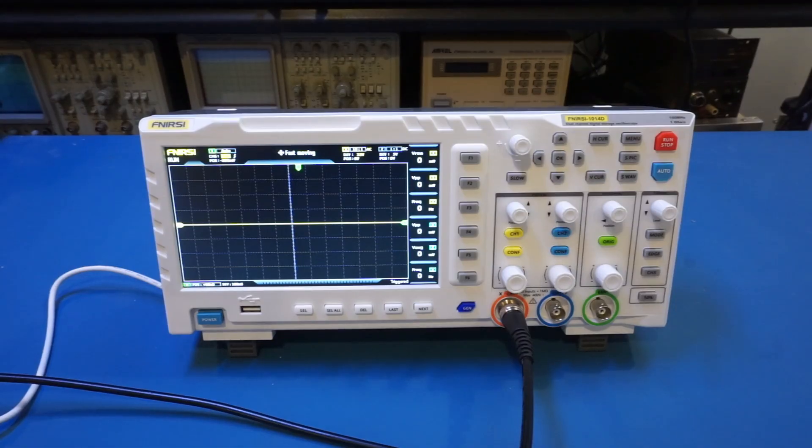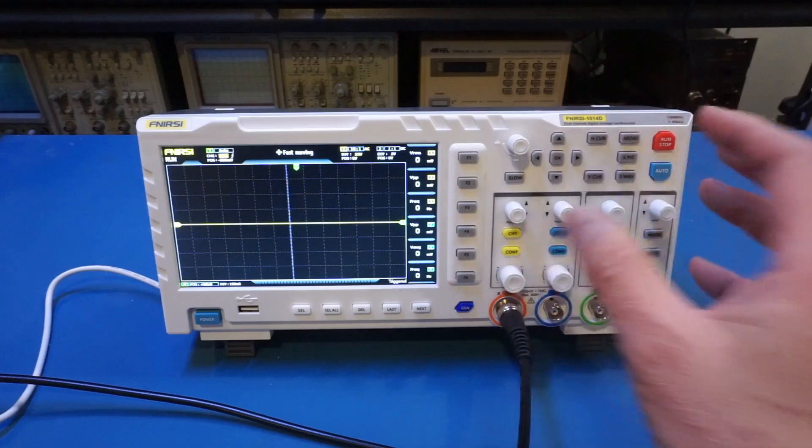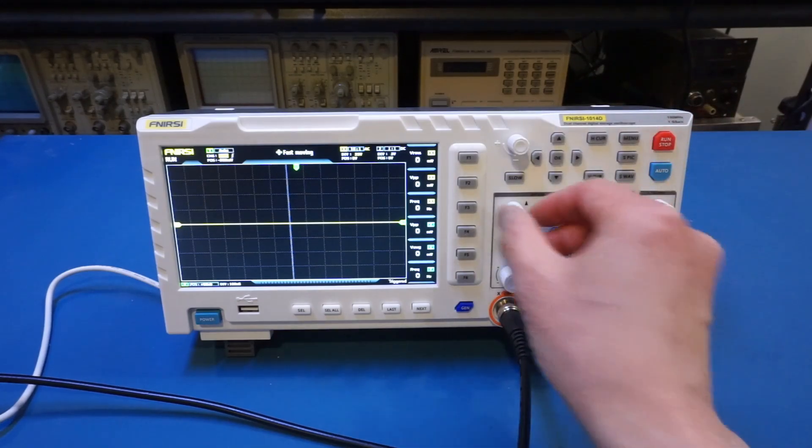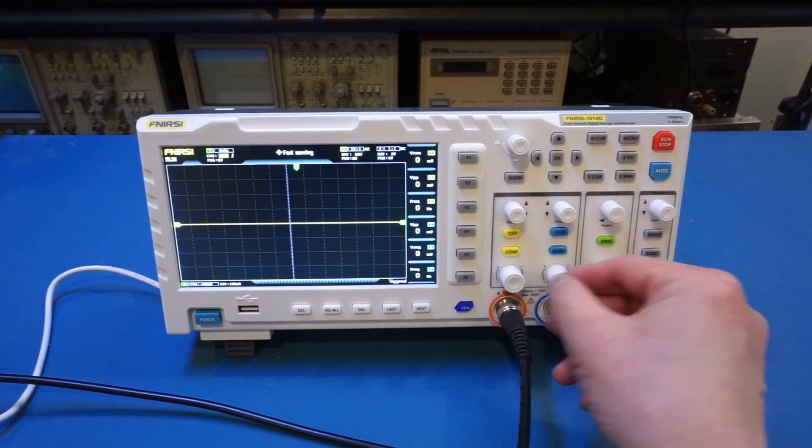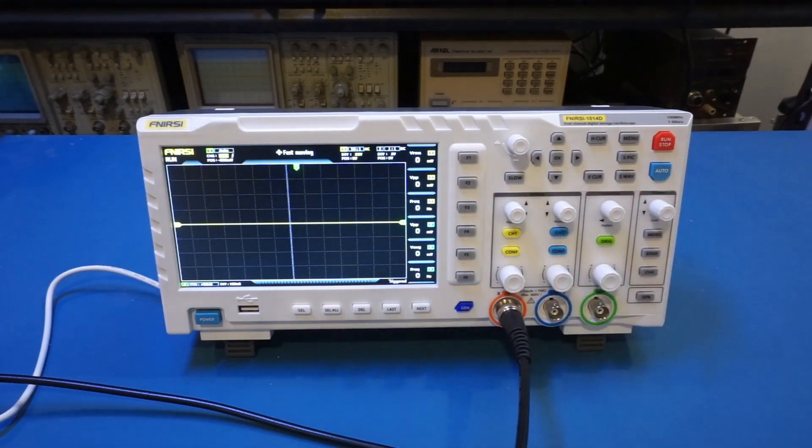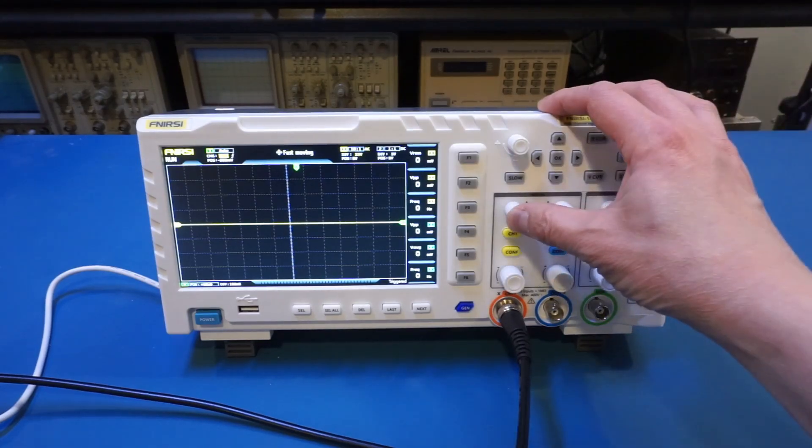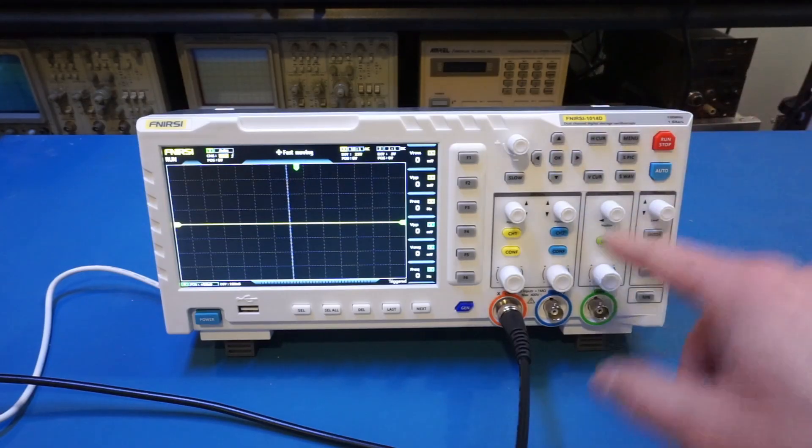And as you can see, it powered on relatively quickly, which is definitely a nice feature to have. And one thing we'll see immediately is that on the scope, the controls are rather unconventional. It does take a little while for you to figure out what each of these buttons do. And unlike a lot of the scopes nowadays on the market, these encoders do not have the built-in button, so you have to use the OK here to do the selection.